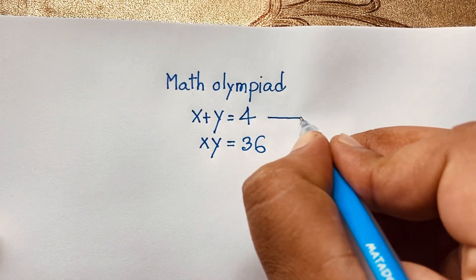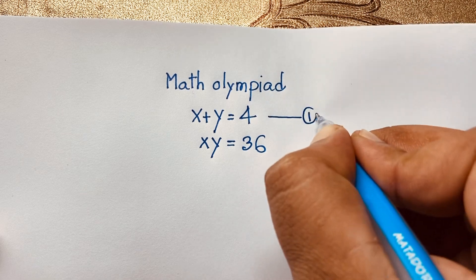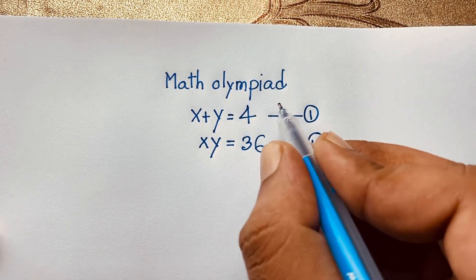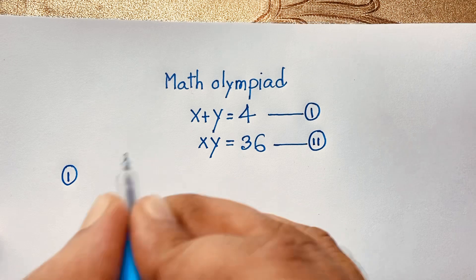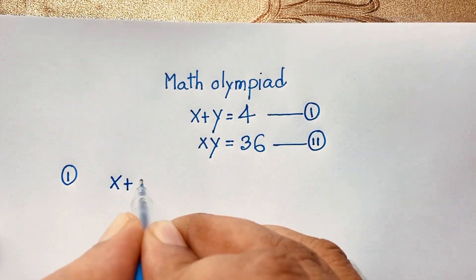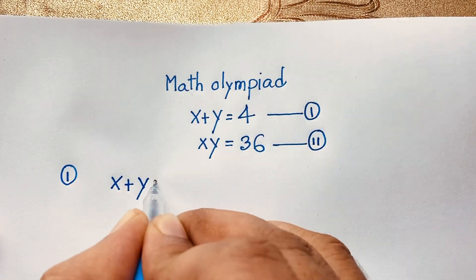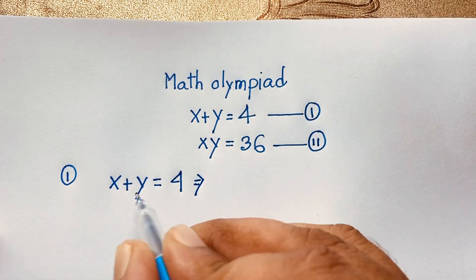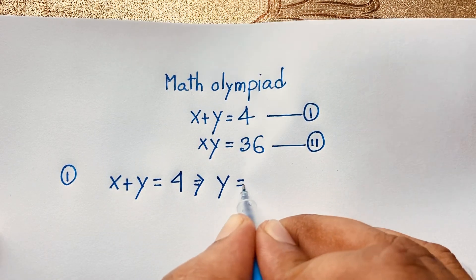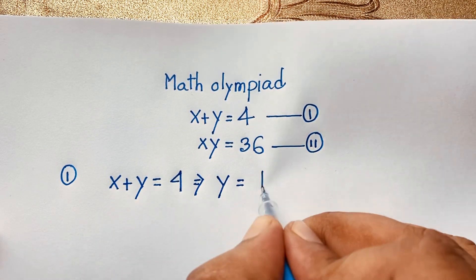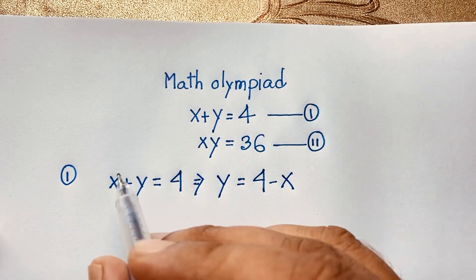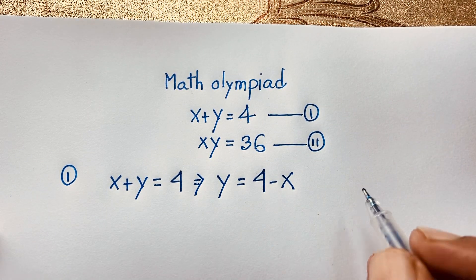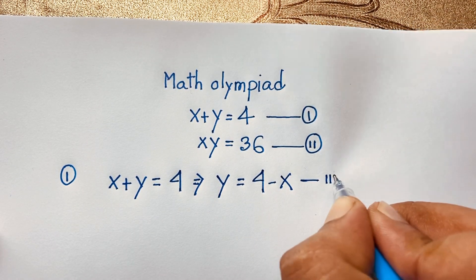So this is our first equation, and this is our second equation. Our first equation will be x plus y is equal to 4. Then you can easily see y is equal to 4 minus x — I just move this x to the other side, so it will be y is equal to 4 minus x. So this is our third equation.